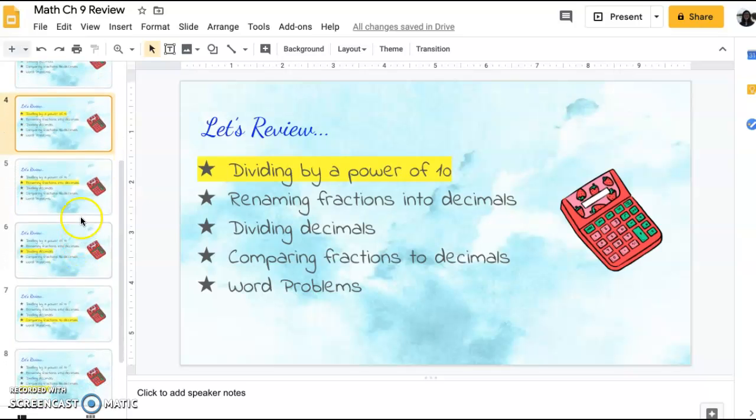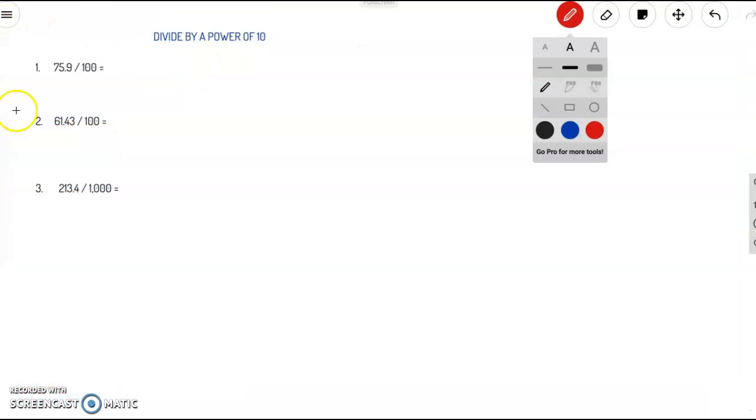First, let's review dividing by a power of 10. We have three practice problems here. Remember that when you are dividing by a power of 10, we have a shortcut. You just have to count the number of zeros. So this one is two zeros. And then move the decimal point that many times. One, two, to the left. So now the decimal point is up here. So our answer is 0.759.